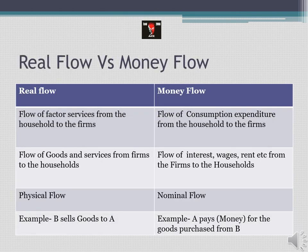Now let us understand the difference between real flow and money flow. In a circular flow of income, each sector is providing the other with some form of good or service and in return getting money. Each transaction in the circular flow of income has two sides: on one hand it is a real flow, and on the other hand it becomes a money flow. When households provide factor services to firms - that is land, labor, capital - that is real flow. In return, when the firms provide them with factor incomes such as wages, interest, and rent, that becomes money flow.